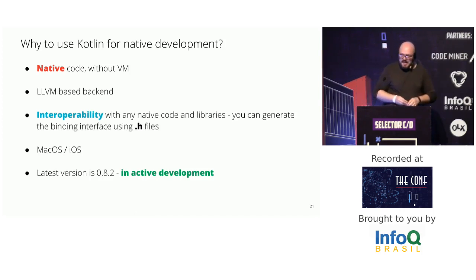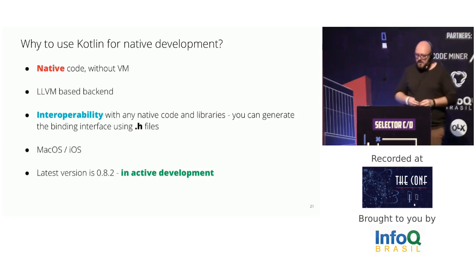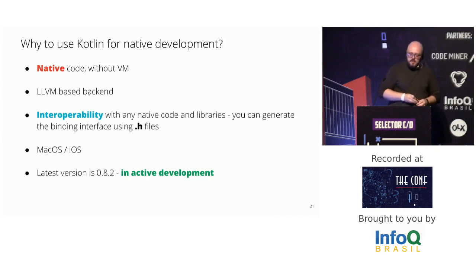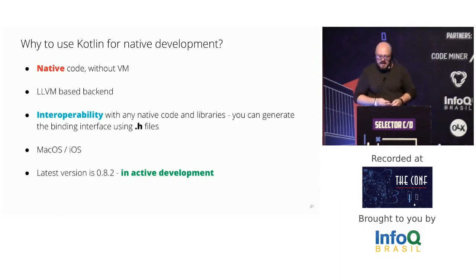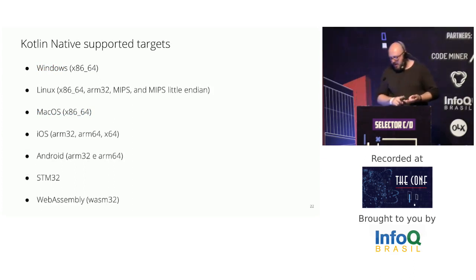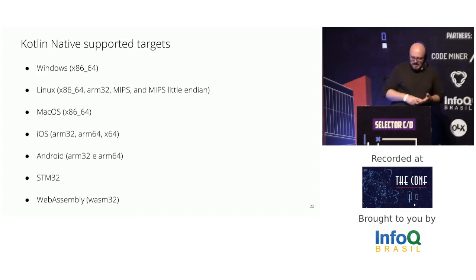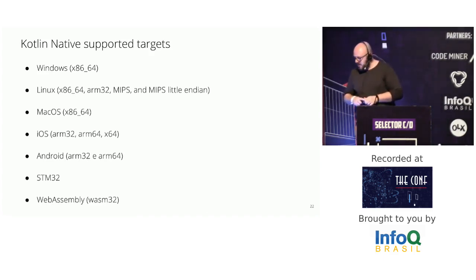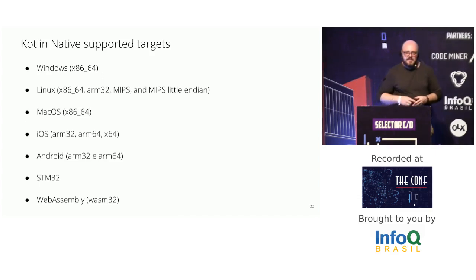Kotlin/Native still doesn't have a stable 1.0 version, but it is in active development. The latest version 0.9 is based on the upcoming Kotlin 1.3, which adds features to improve interoperability like unsigned types, which are very common when writing native code. Kotlin/Native supports many platforms including Windows, Linux, macOS, iOS — including older versions with ARMv7 — Android, and even WebAssembly.